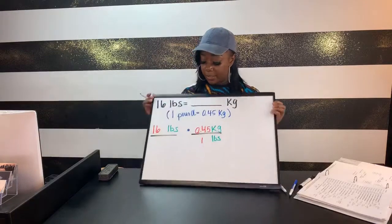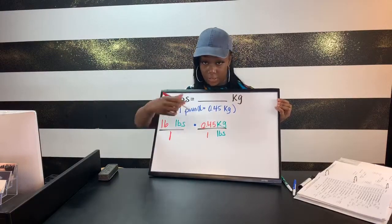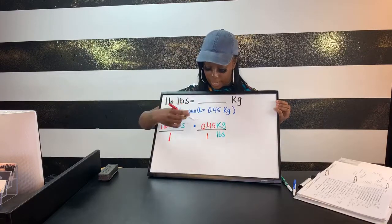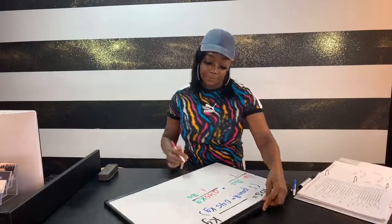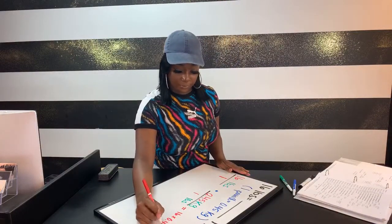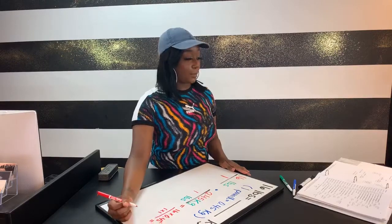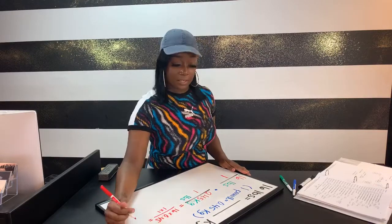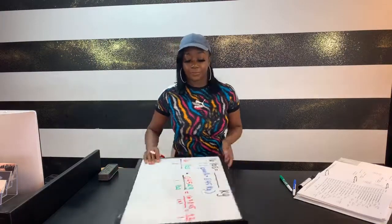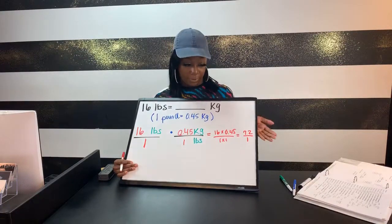We place a one under the 16 to make it a fraction, then multiply straight across: 16 times 0.45 on top, and one times one on the bottom. 16 times 0.45 gives us 7.2, and one times one is one. So 7.2 divided by one is just 7.2.